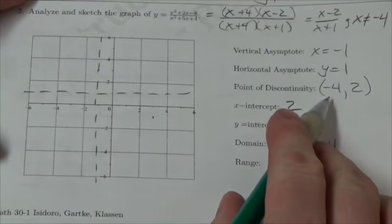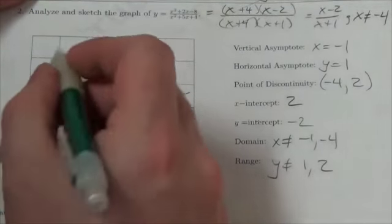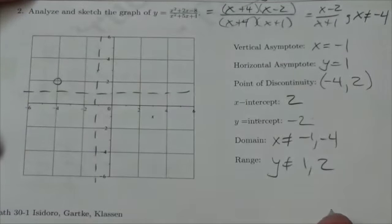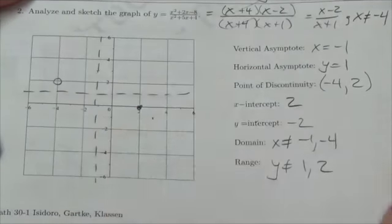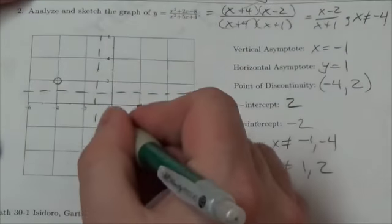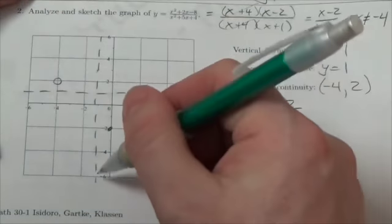And I've got a point discontinuity at negative 4, positive 2. Okay, so that's going to be an open circle right there. I've got an x-intercept of 2, it's going through there. And a y-intercept of negative 2.